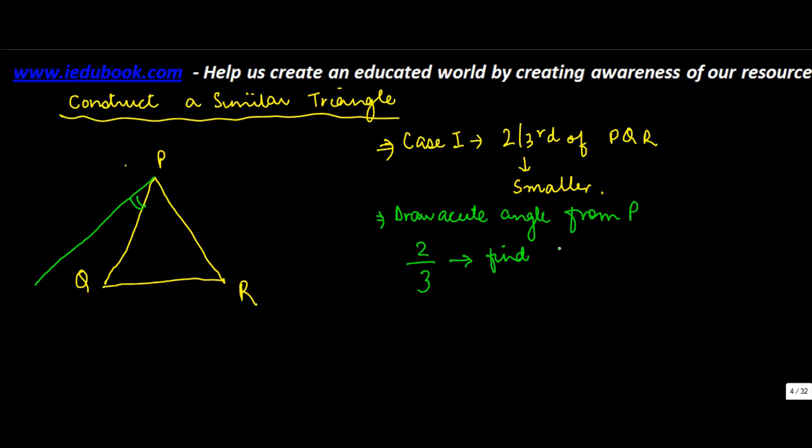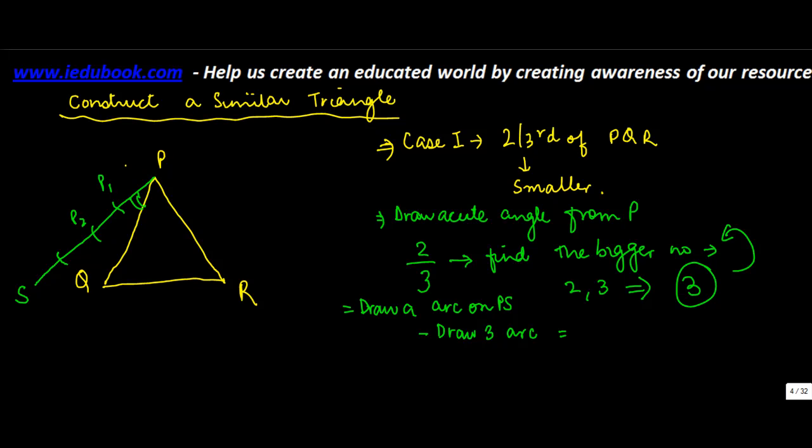What's the bigger number amongst these two? Three. So basically three is the bigger number. Once you've got this number, you draw an arc from P. Let's call this as S. Draw three arcs, so P1, then P2, P3.